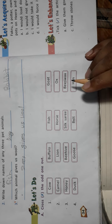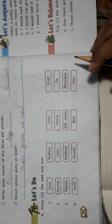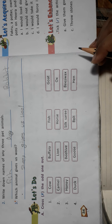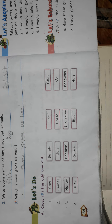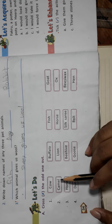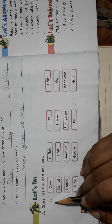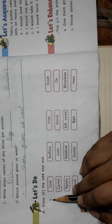Here you have to cross the odd one out. Odd one means which is different — which is odd, which is different from the others. So you have to find it out and put a cross over there.